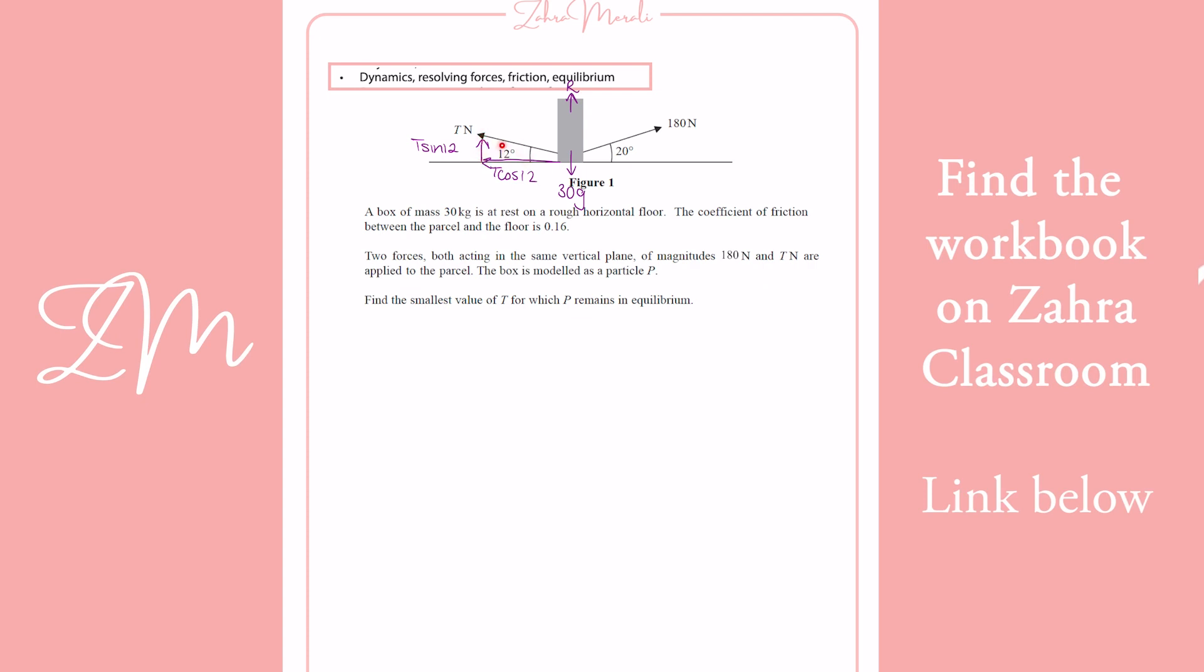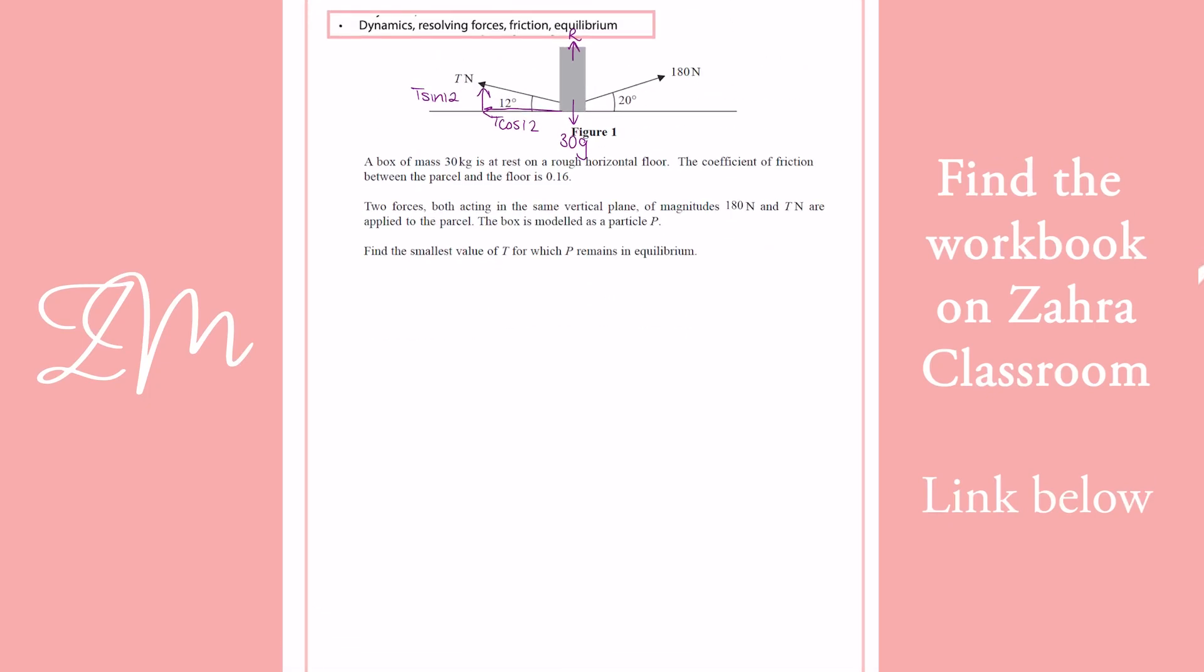Now remember, wherever your angle is, opposite is always sine, adjacent next to is always cosine. So in the same way, we go across and up. This is going to be 180 sine 20 and 180 cos 20.